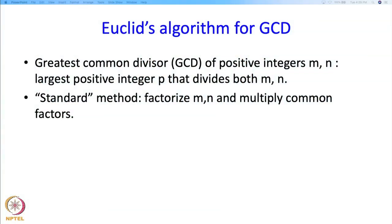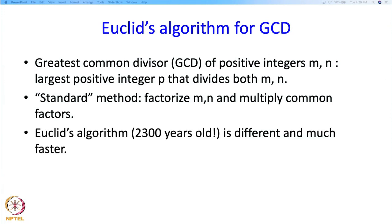There is a standard method for doing this which you probably learnt in primary school which is to factorize m and n and then multiply out the common factors. Euclid's algorithm is a very old algorithm and is different and actually it runs much faster.